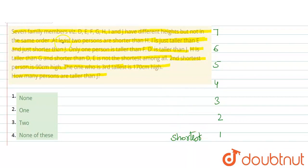Now, here the given is, at least 2 persons are shorter than H. That means 2 people are shorter than H, or it will be more than 2 people will be shorter than H. Then given is, I is just taller than E and just shorter than J.